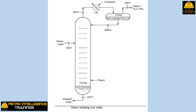Third, some of the stripping steam condenses in the overhead condenser. The condensed steam that accumulates in the reflux drum is totally refluxed back to the top tray of the stripper tower. Fourth, a small amount of the stripping steam remains as steam and leaves the reflux drum with the H2S and NH3 vapor product. From this distribution of the stripping steam, we can conclude that the pounds of vapor to the bottom tray are much larger than the pounds of vapor leaving the top tray — just the opposite of the diesel oil stripper.